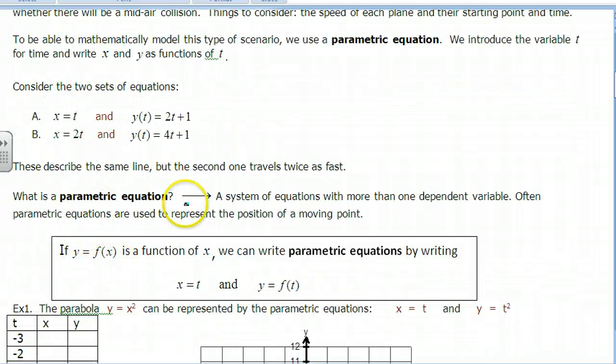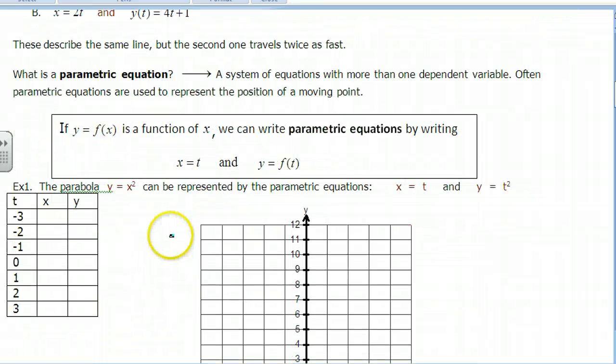So a definition of parametric equation: a system of equations with more than one dependent variable. Often parametric equations are used to represent the position of a moving point. Now this is the shortcut way but we won't always use this. X might be defined in more than just plain t terms as we learned up here.